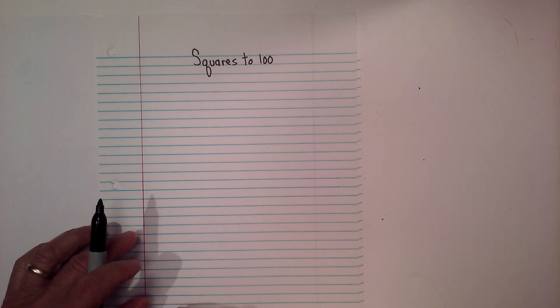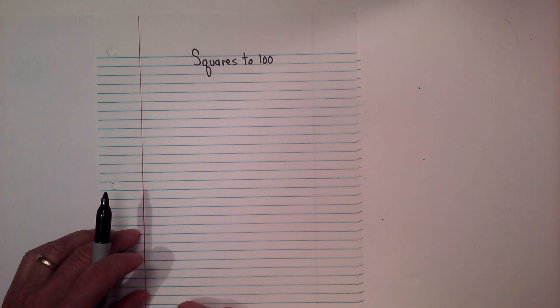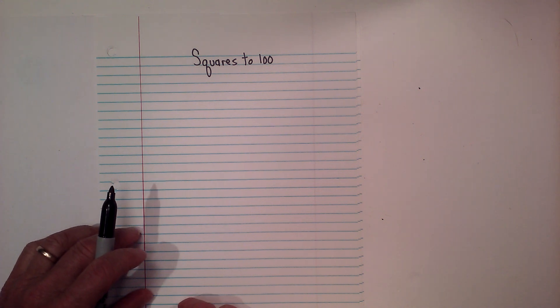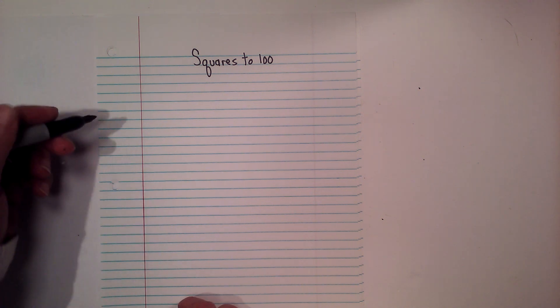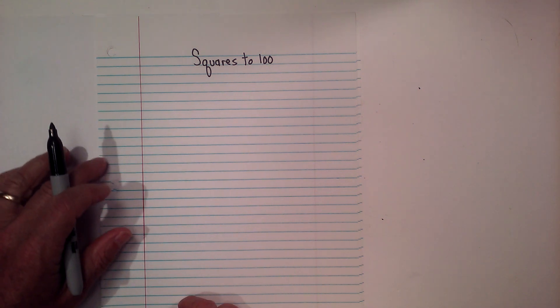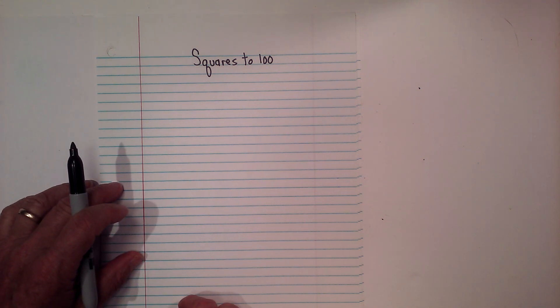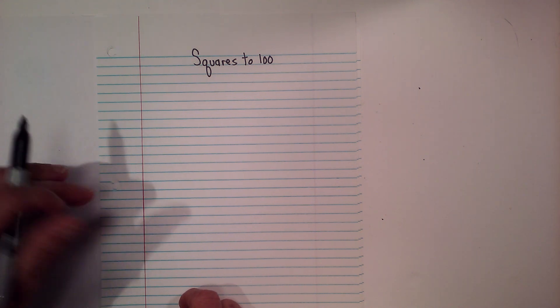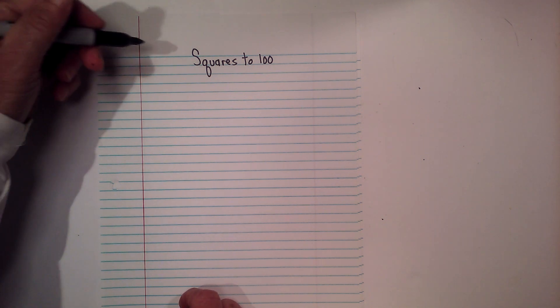In this video I'll show you an easy and quick way to find the squares between 1 and 100. You may be in a situation where you need to know the squares of several numbers and not be able to use a calculator, like on a test, and this is a really easy way.